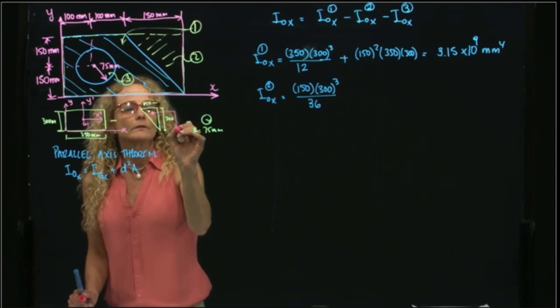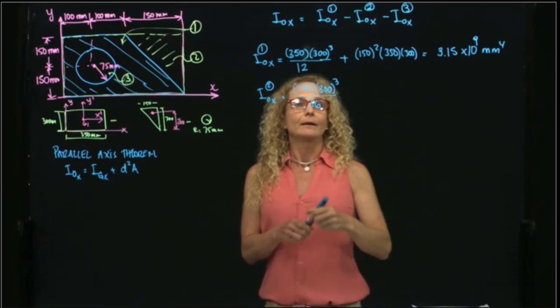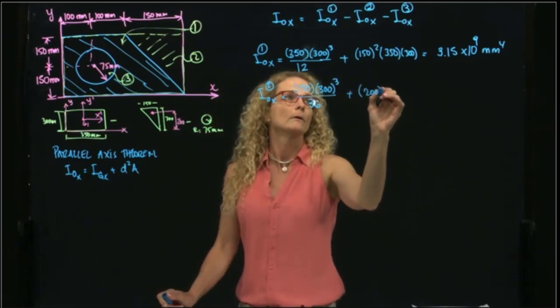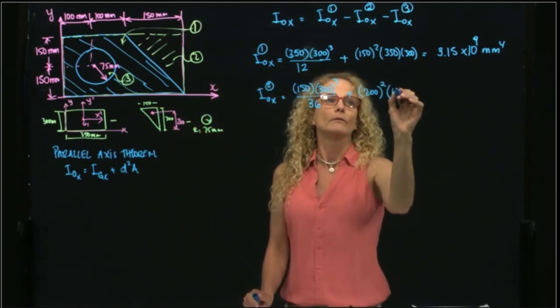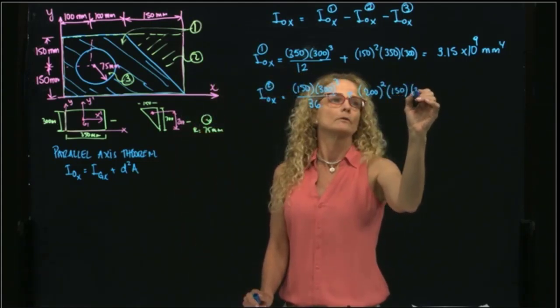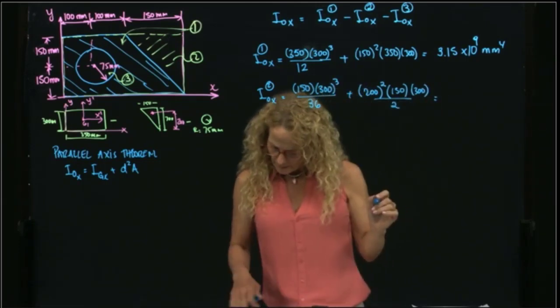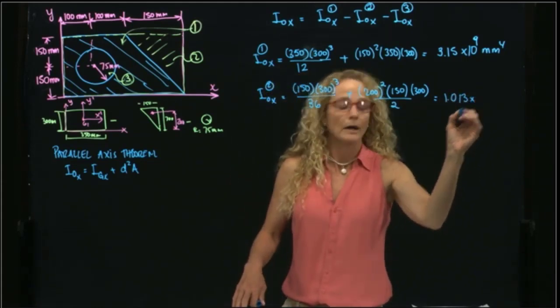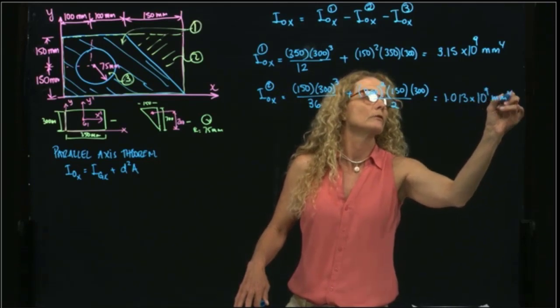So this distance over here is 200. So we apply the parallel axis theorem, so that distance is 200. And then my area is 150 times 300 divided by 2. And that is 1.0113 times 10 to the ninth millimeters to the fourth.